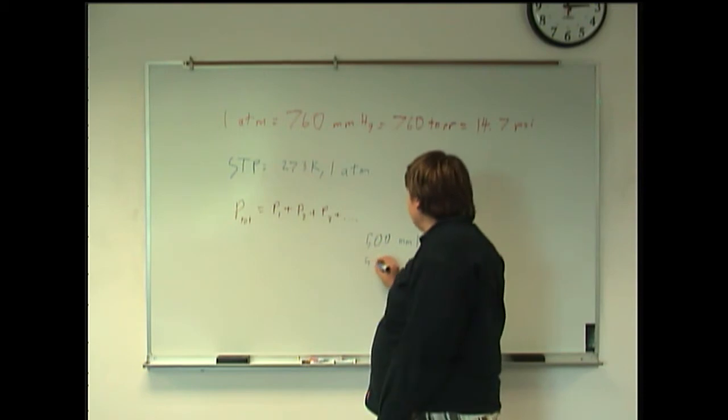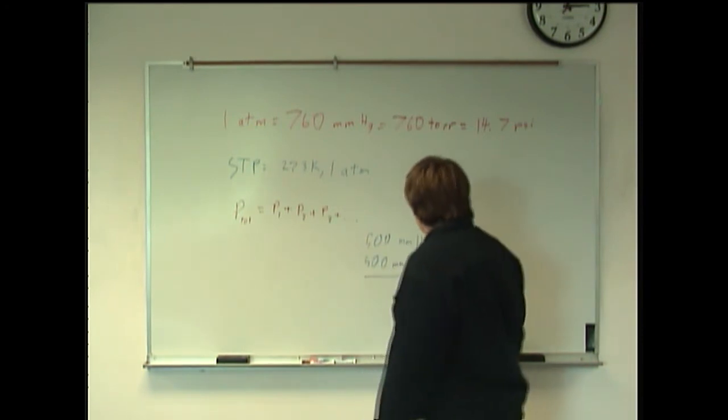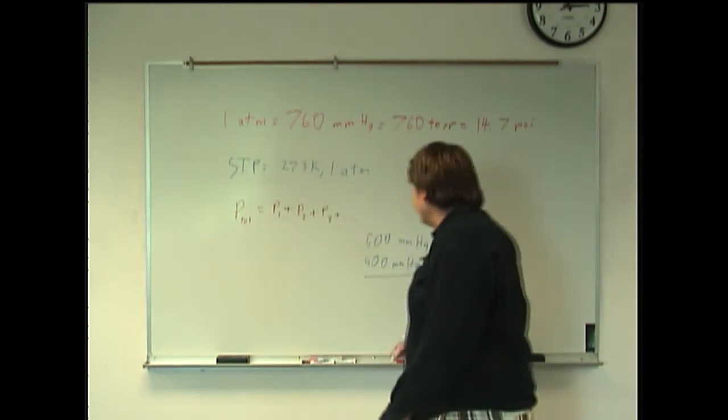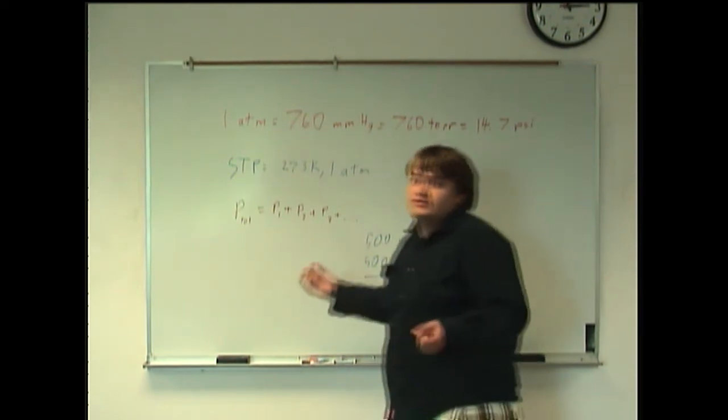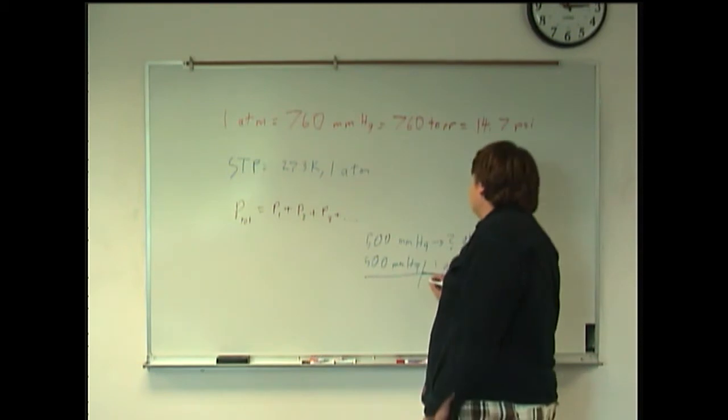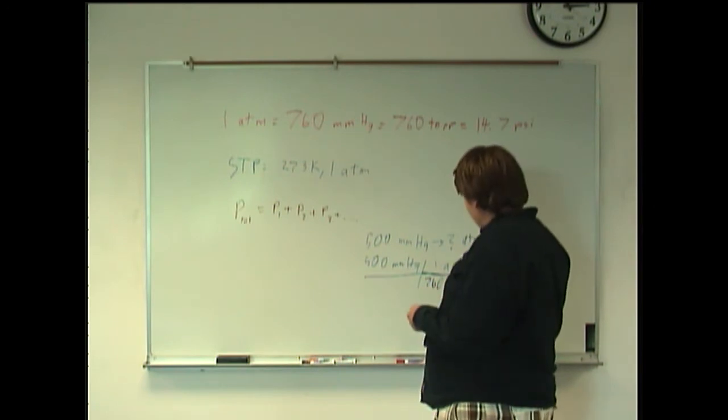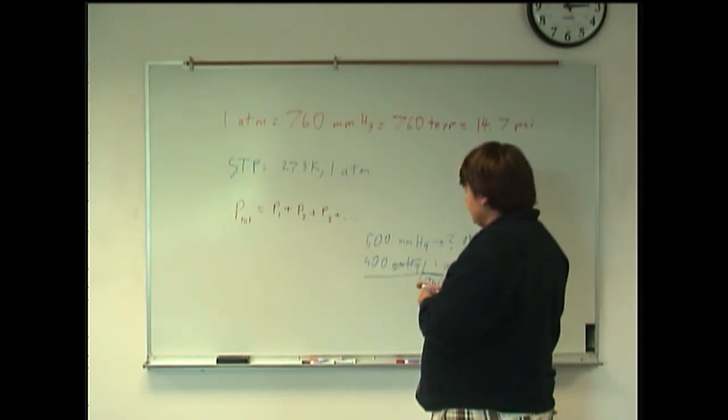Start with the value given. And then, here, you're going to want to put what you're looking for on top, in this case, the atmosphere, the one atmosphere. And then, what you're trying to cancel out on bottom, the millimeters of mercury. Then, millimeters of mercury cancel out, and you just get atmospheres.